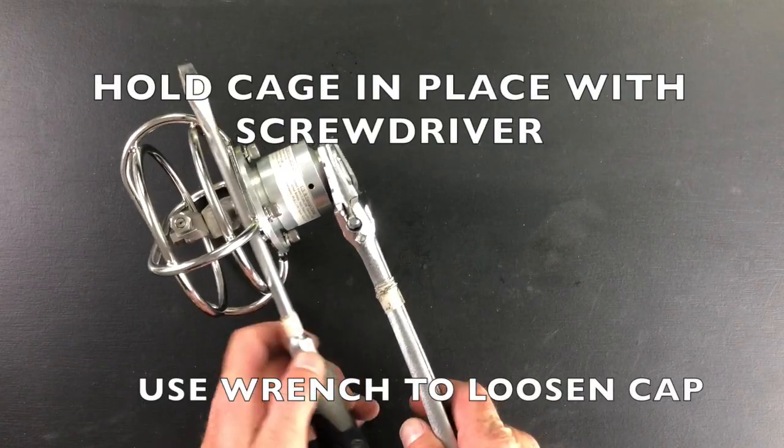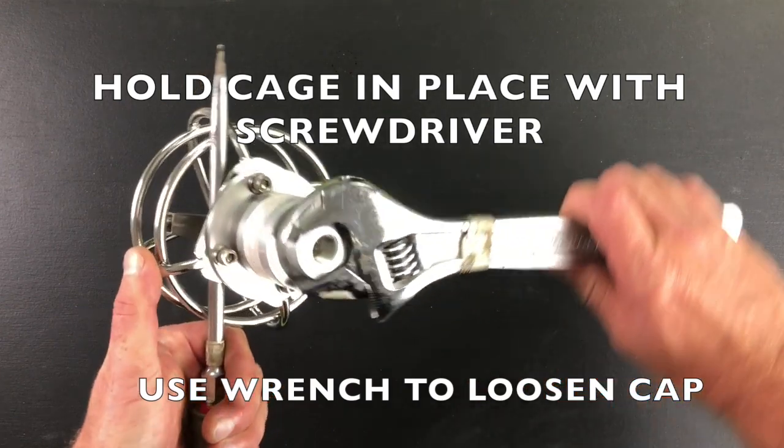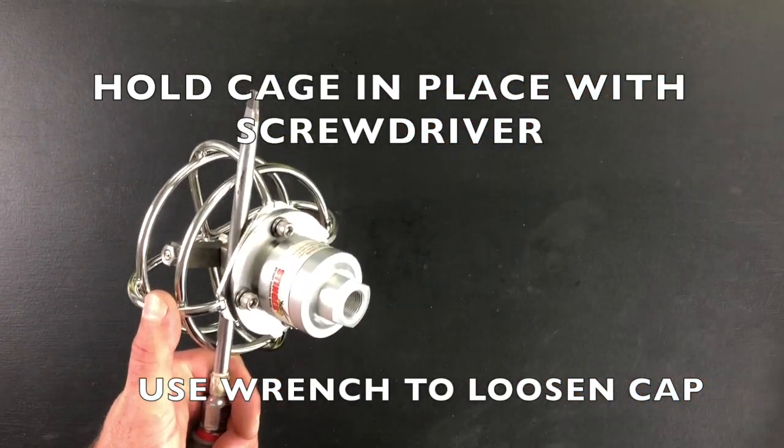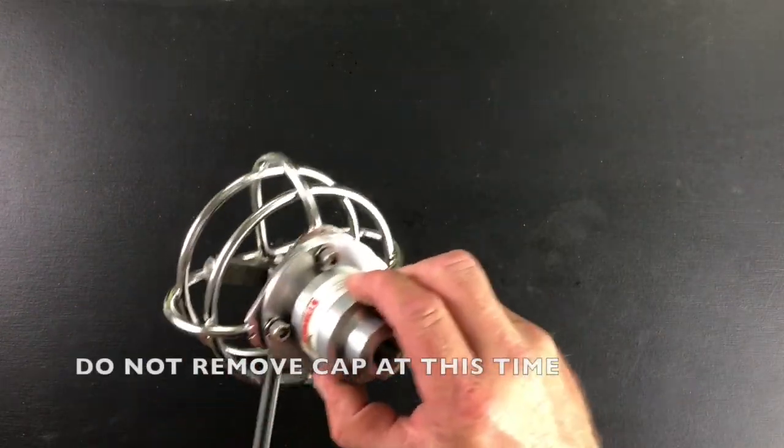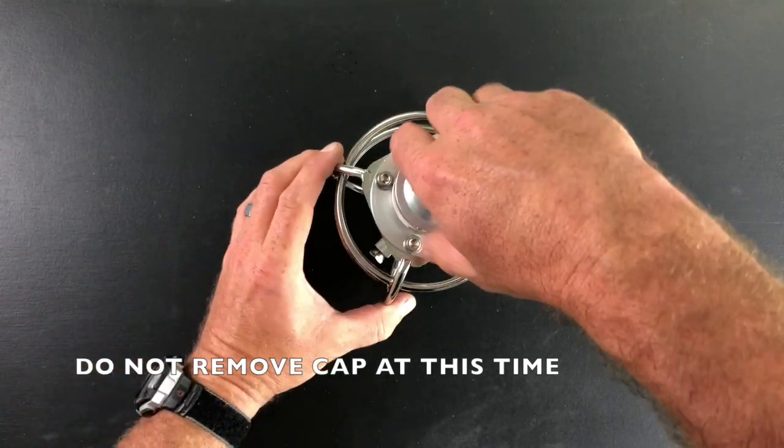Step one is removing the cage. Place a long screwdriver to the opening of the cage to hold it in place. Then use a wrench to loosen up the cap. Do not remove the cap at this point.